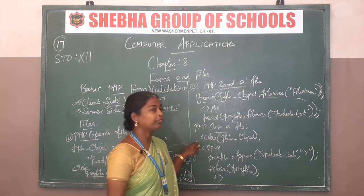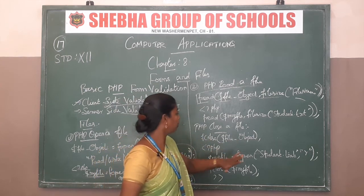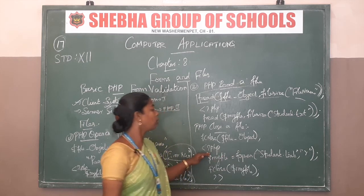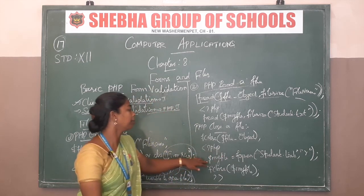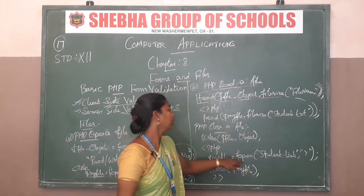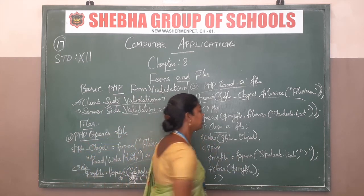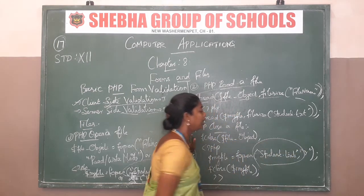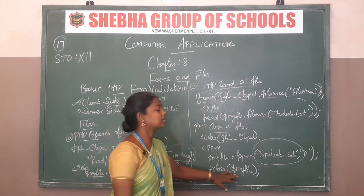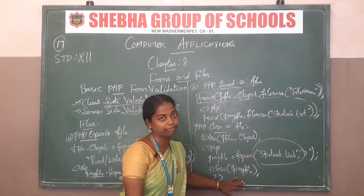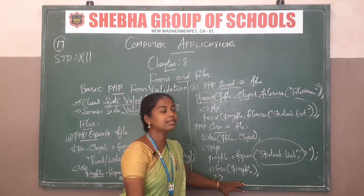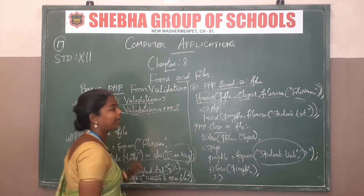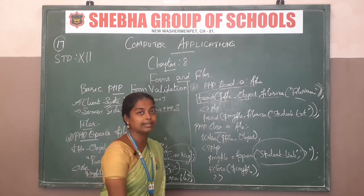That is all. fclose file object. The PHP coding uses myFile — fopen is already created for student.txt. Then close the file, myFile. These are the concepts of file contents.